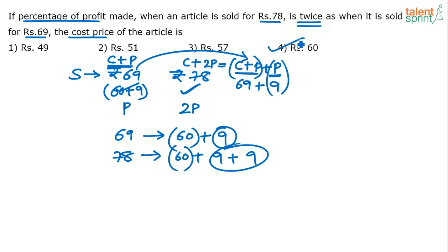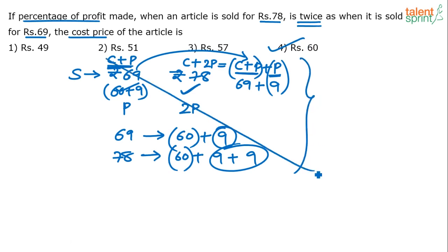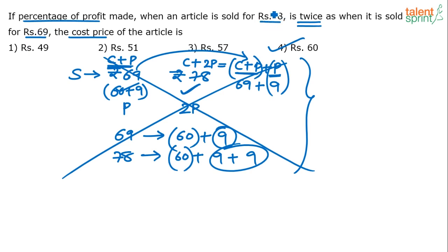In both cases we get 60 rupees as common, which is the cost price. So the cost price is 60 rupees. Please do not go by the length of the explanation — all these steps are not really needed. It's very easy: it's all about the difference. The difference between 78 and 69 is 9 rupees.